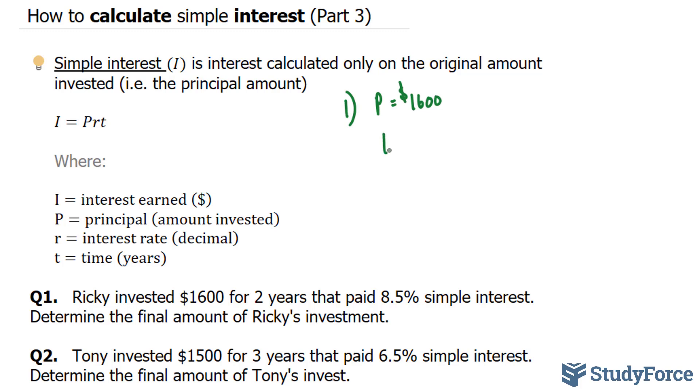So in our case, our T value, luckily it's in years already, is 2. Our R is 8.5 divided by 100, which is 0.085.